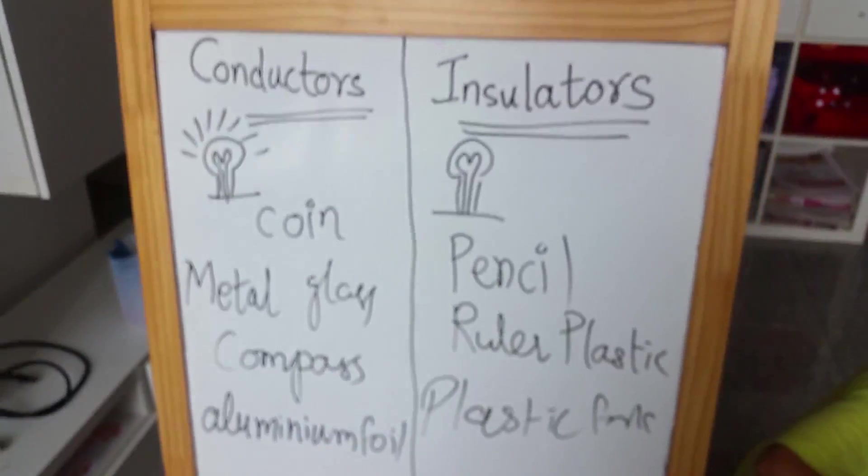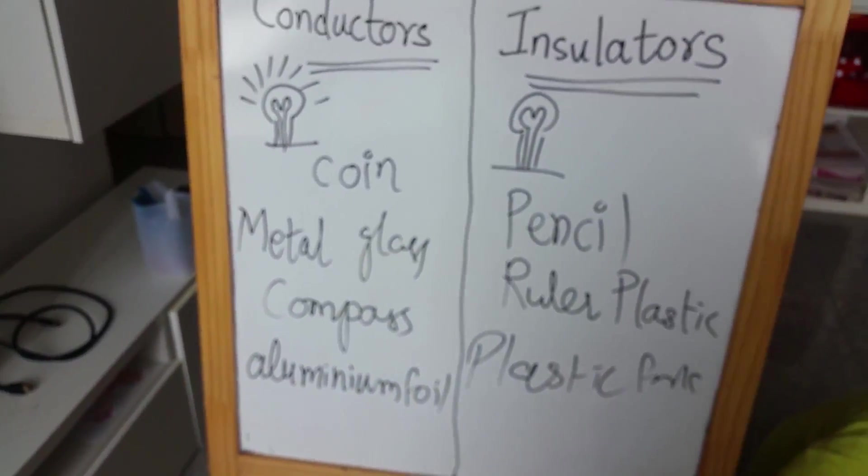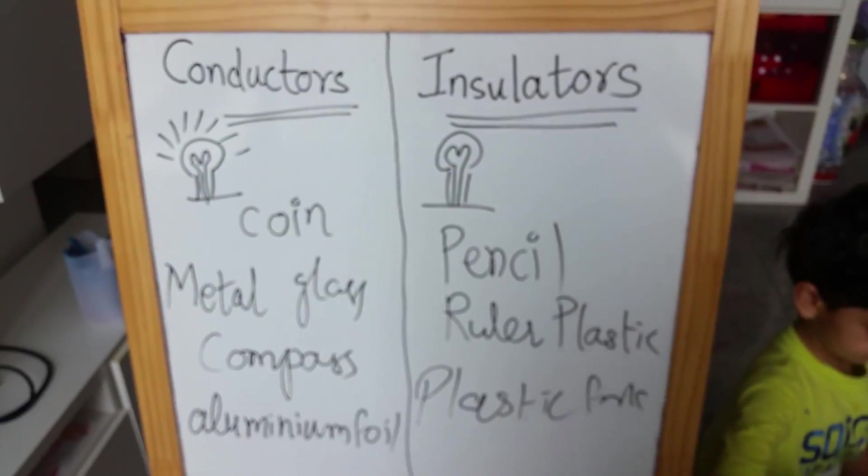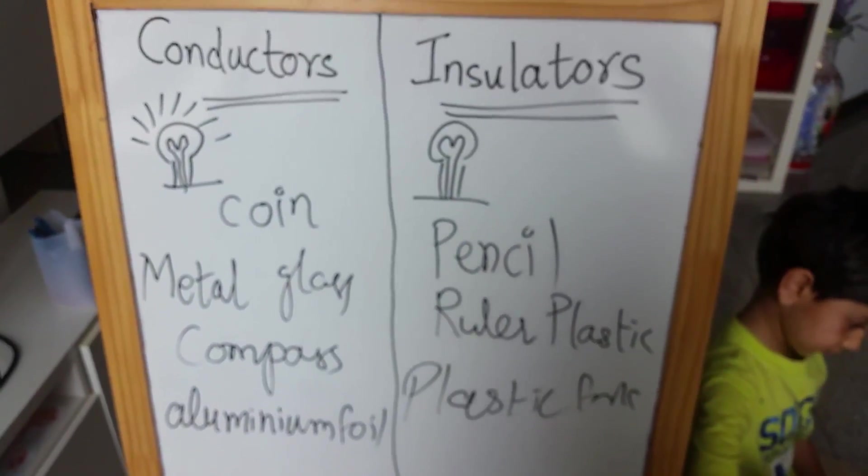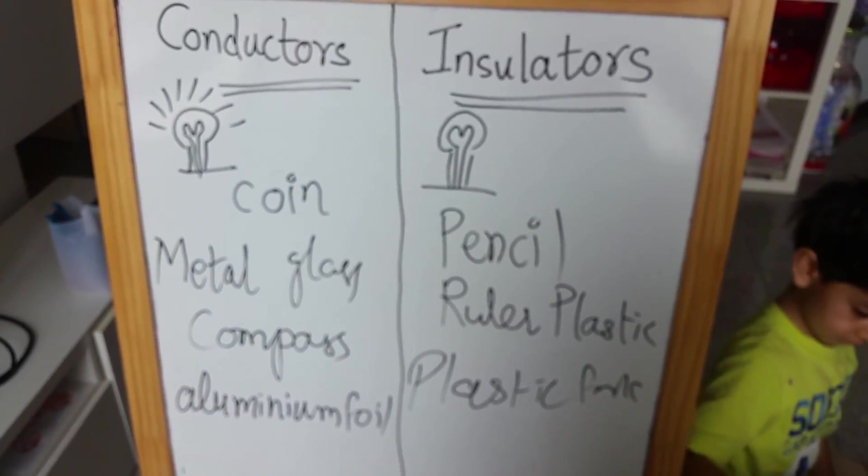So like this we have classified our set of objects into conductors and insulators. Do try this experiment and let us know how did your kid like it?